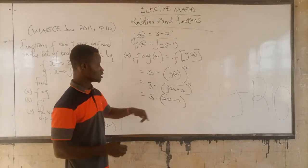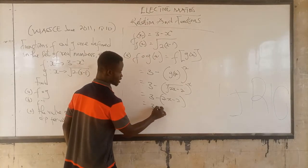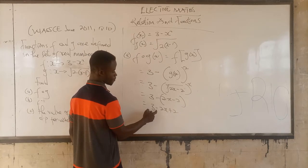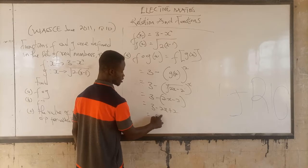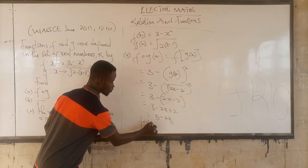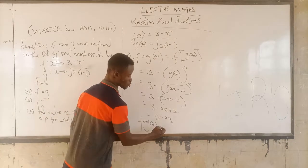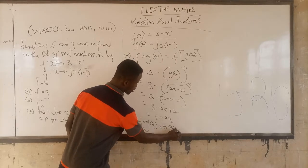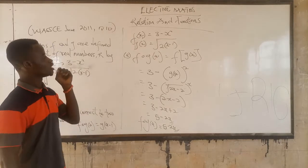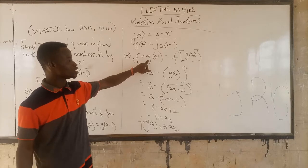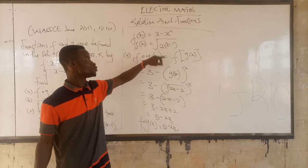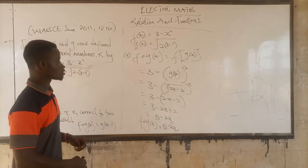So we get 3 minus (2x minus 1), which expands to 3 minus 2x plus 2, and this gives us 5 minus 2x. So f of g(x) equals 5 minus 2x. Whenever you have to find fog, start as if you are writing the function f, but where you see x, put g(x) there.